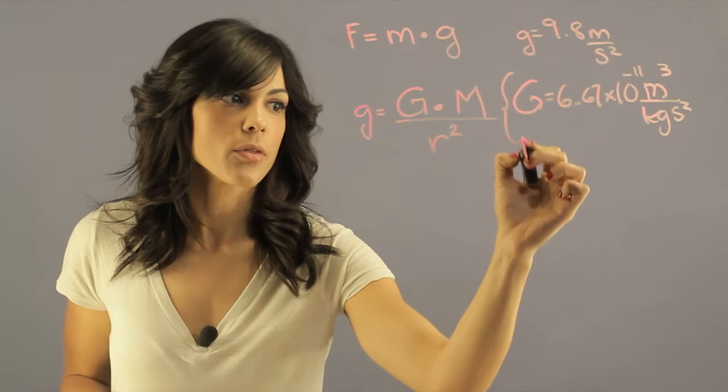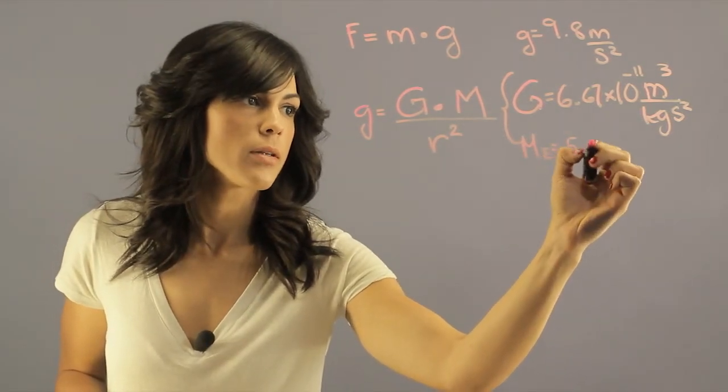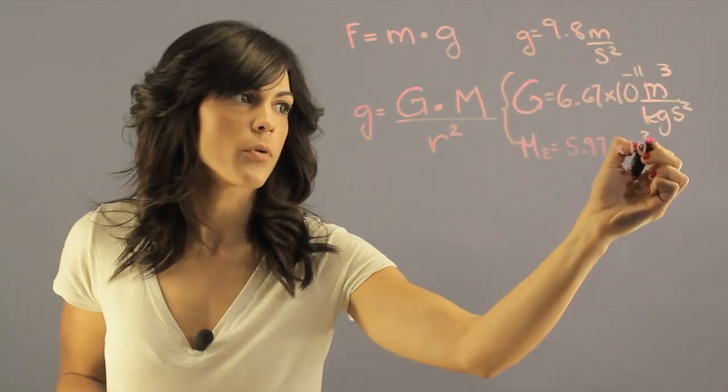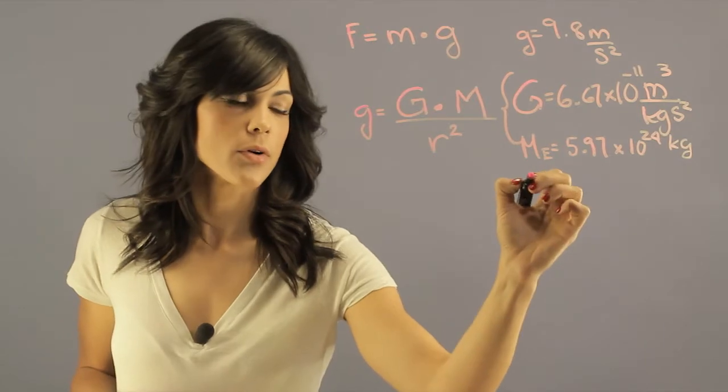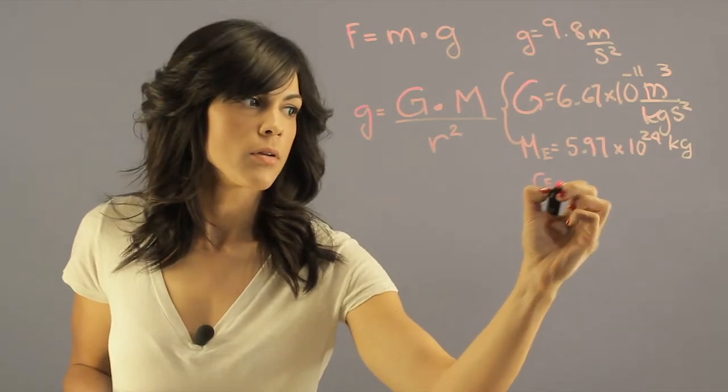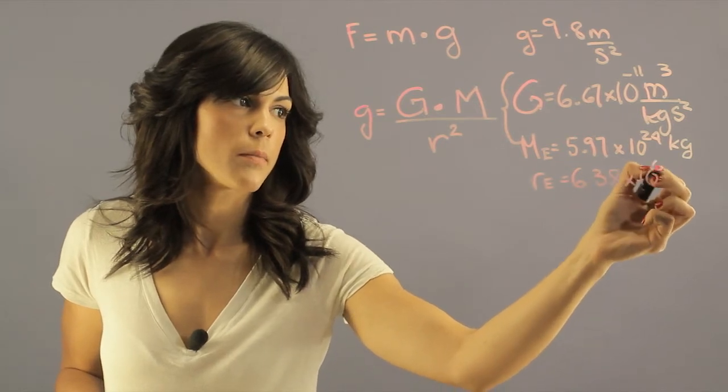The mass of Earth is 5.97 times 10 to the 24 kilograms, and the radius of Earth equals 6.38 times 10 to the 6 meters.